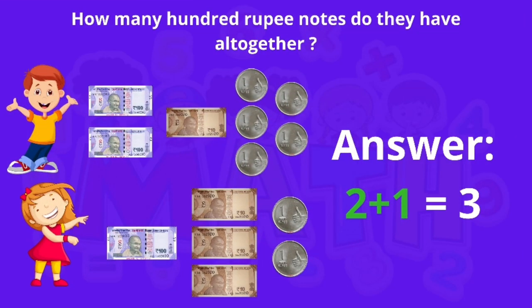Now we will see how to add numbers with the help of money. If Tony has two 100-rupee notes, one 10-rupee note and five 1-rupee coins, and Sonu has one 100-rupee note, three 10-rupee notes and two 1-rupee coins. So how many 100-rupee notes do they have altogether? Let us find out.